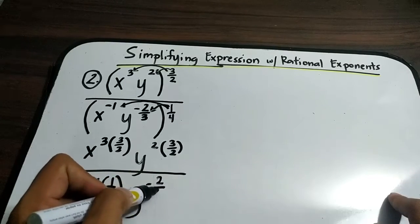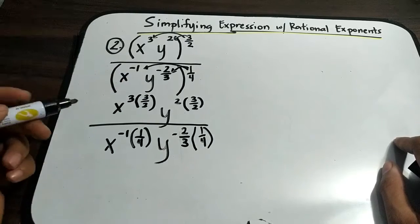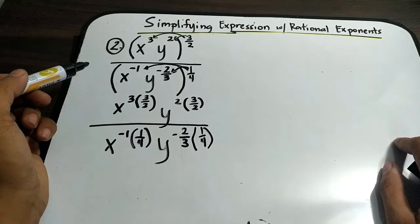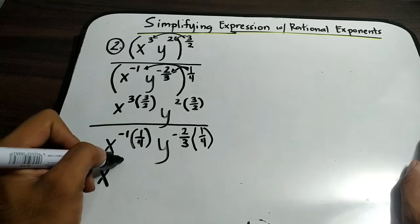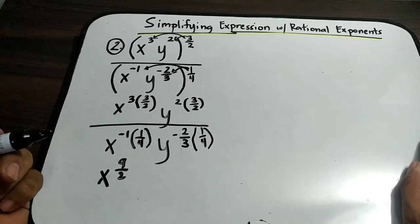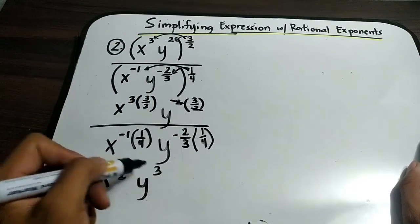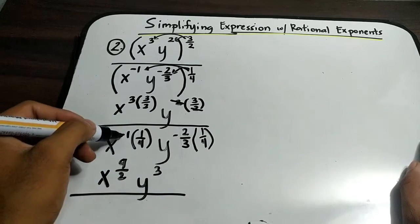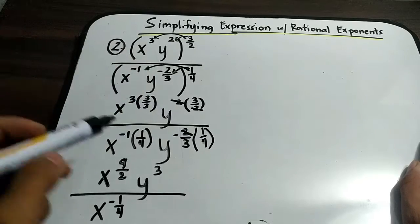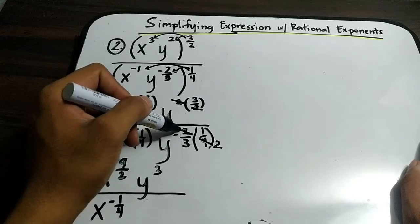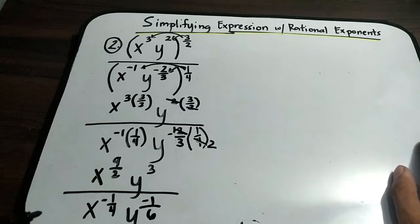For the denominator, we have negative 2 over 3 times 1 over 4. All you need to do is multiply the exponents. Simplifying, we get x raised to 9 over 2, y — you can cancel 2 and 2 — so we have y cubed, all over x raised to negative 1 over 4, and for the y variable, eliminating 2 from the denominator gives y raised to negative 1 over 6.